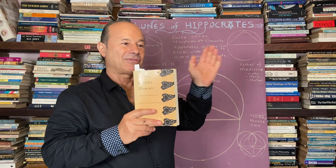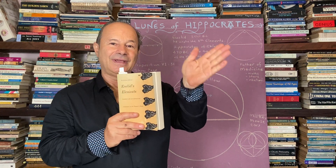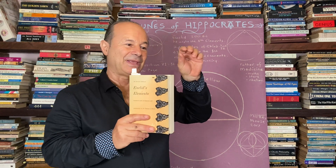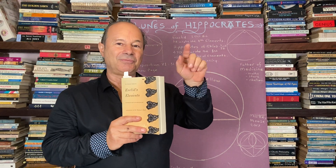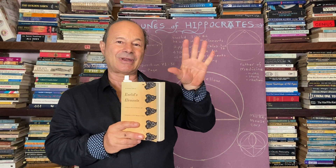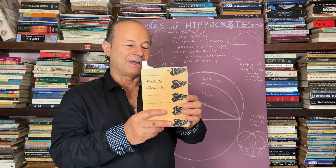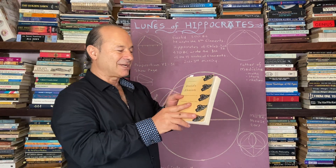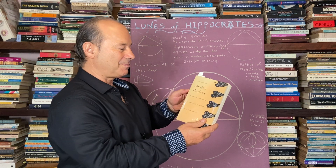Euclid wrote the fourth, fifth, and sixth books. The second and third books are missing — we still don't have them. But Hippocrates, who we're talking about today, actually wrote the first book.